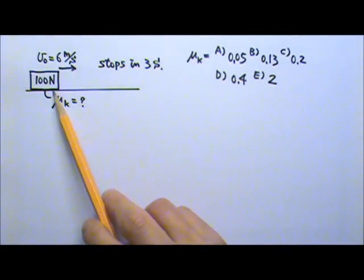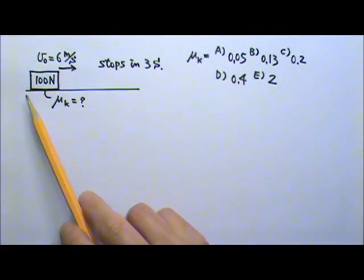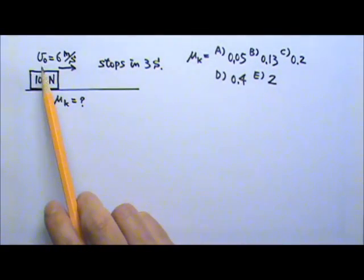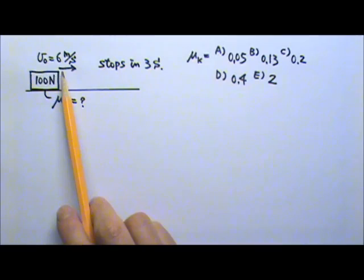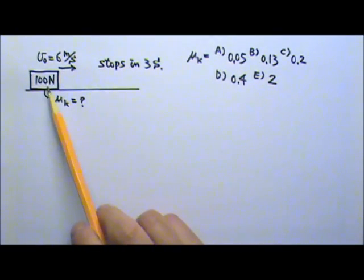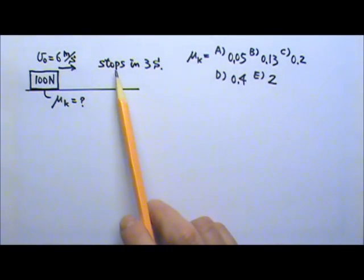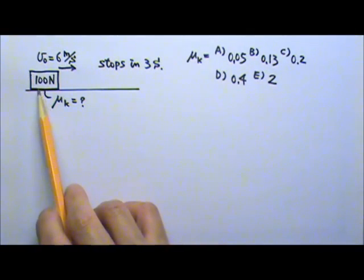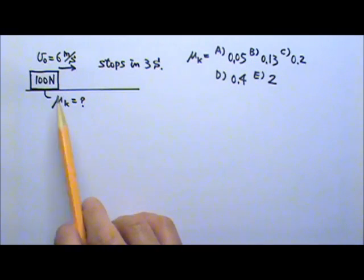A box weighing 100 newtons is on this horizontal surface. It's given an initial velocity of 6 meters per second and it travels along the surface and stops in 3 seconds. And we're looking for the μ_k between the box and the surface.